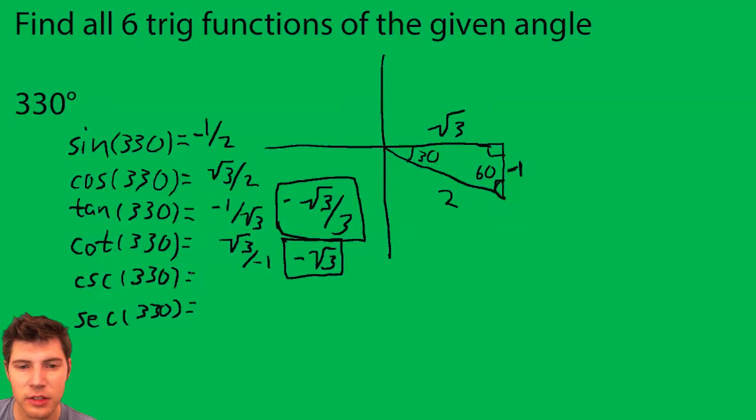Cosecant is the sine flipped, so it's just negative 2. And secant is the cosine flipped, so it's 2 over root 3. Once again, we can't have root 3 in the denominator, so top and bottom by root 3. We end up with 2 root 3 over 3.